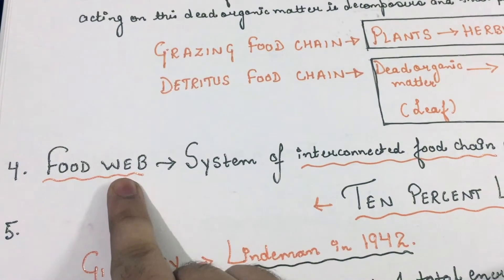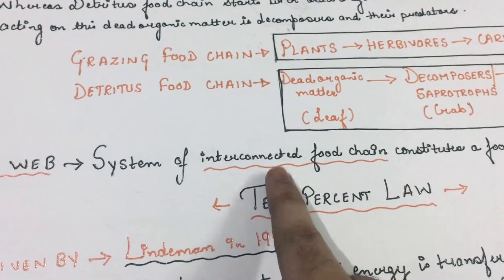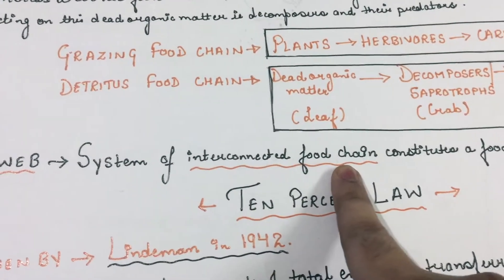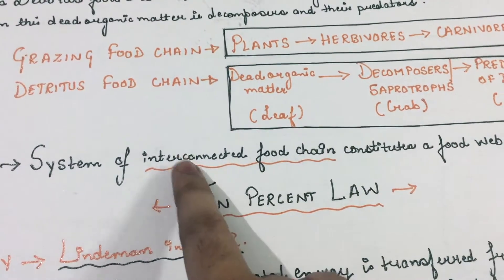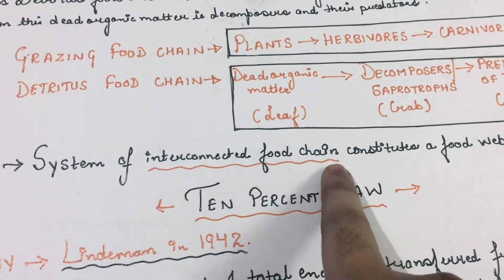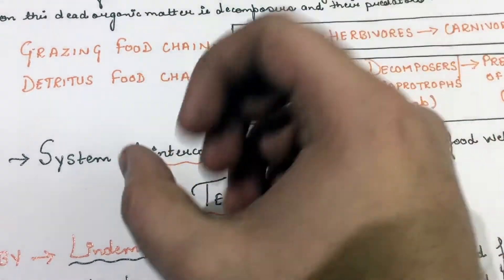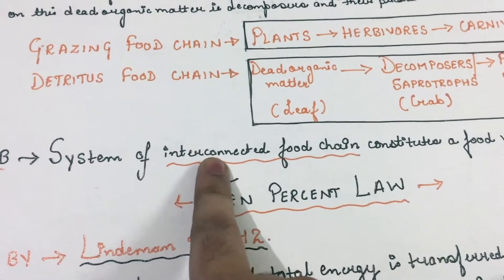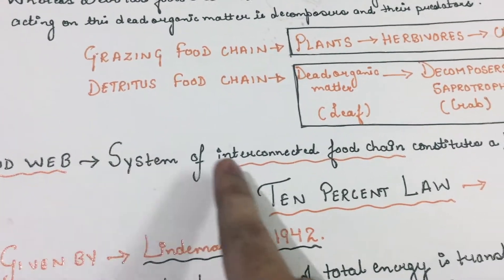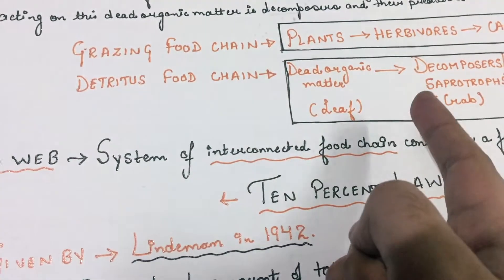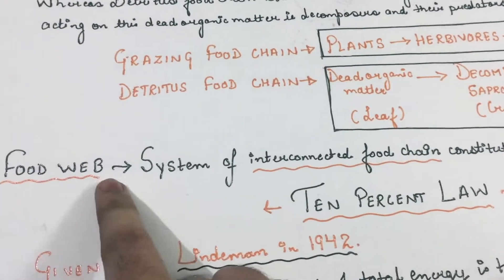Now let us understand what is a food web. A system of interconnected food chains is called a food web. If we connect various food chains with each other, a food web is formed.